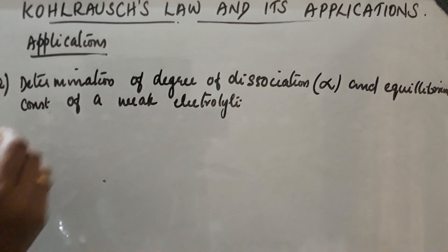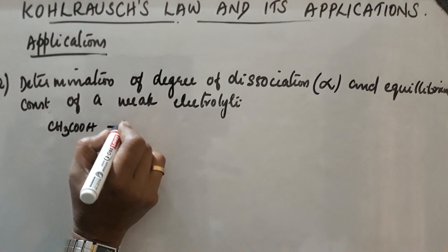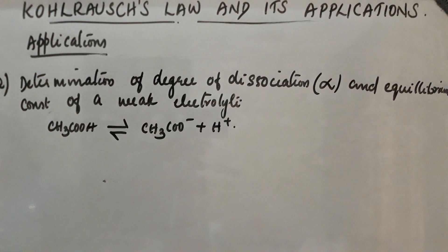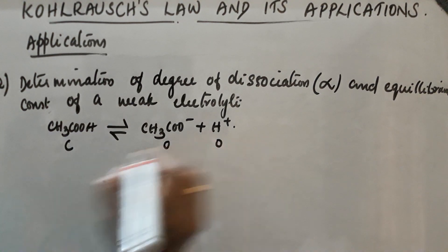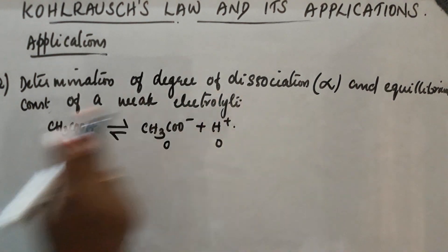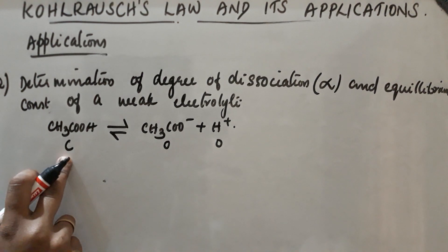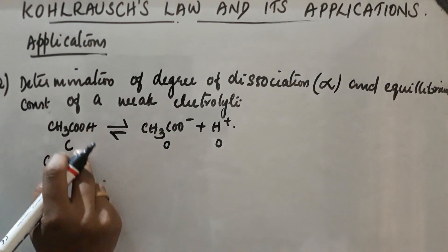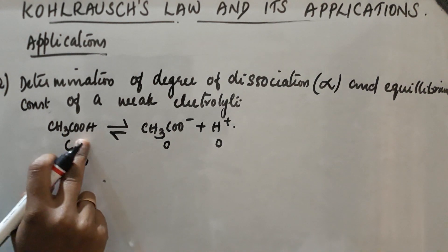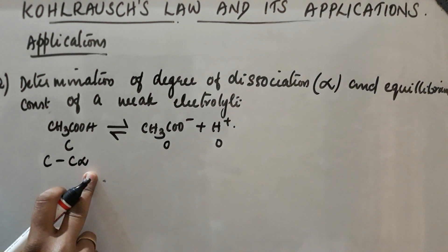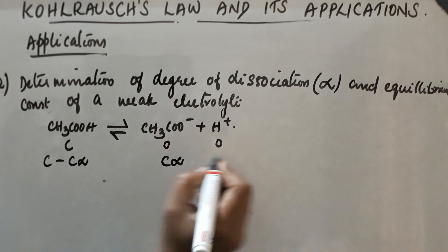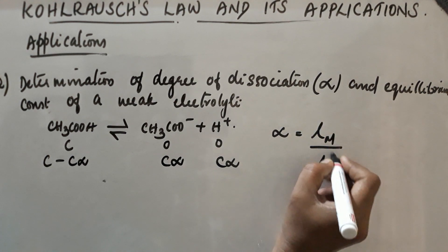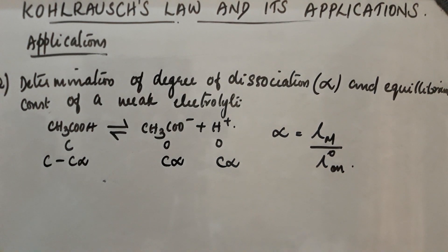Let us take the example of CH₃COOH dissociating as CH₃COO⁻ plus H⁺. Initially, concentration is C for the reactant and 0 for products. Here α is the degree of dissociation and K is the equilibrium constant. C is the initial concentration. After some time, the concentration of CH₃COOH becomes C − Cα, while the concentrations of CH₃COO⁻ and H⁺ are each Cα.